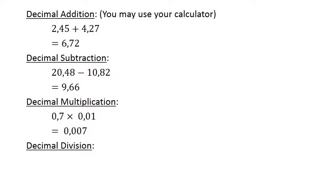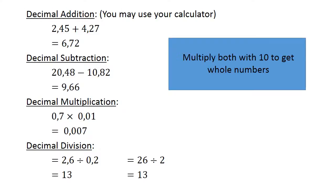Decimal division: two point six divided by zero point two. Multiply with ten to get whole numbers. Twenty-six divided by two equals thirteen.